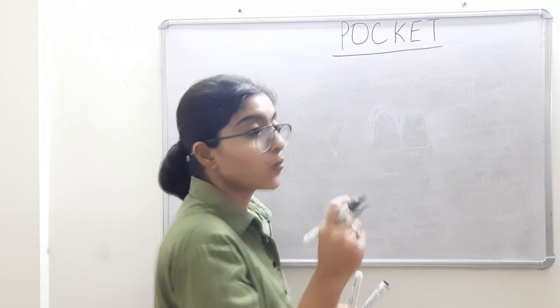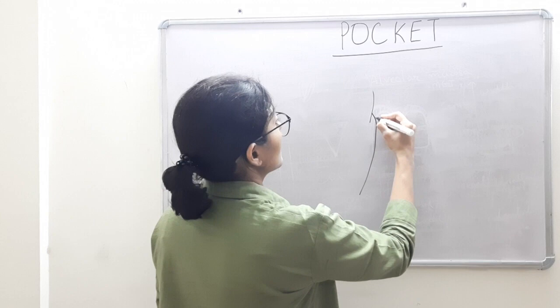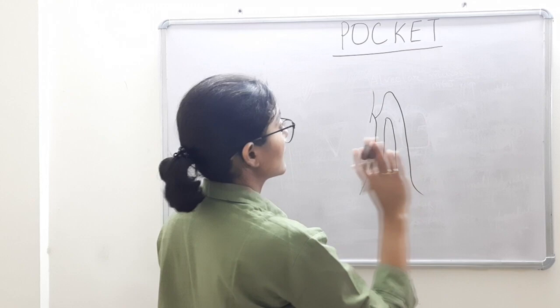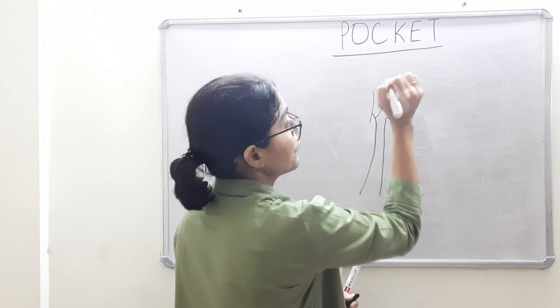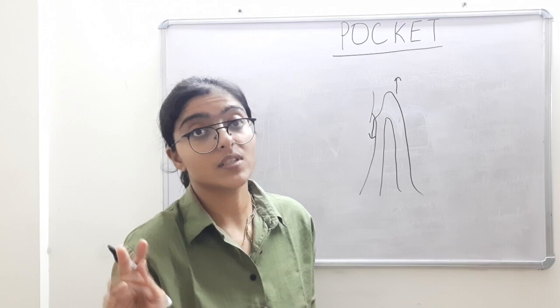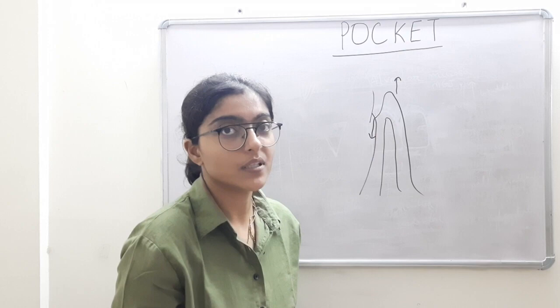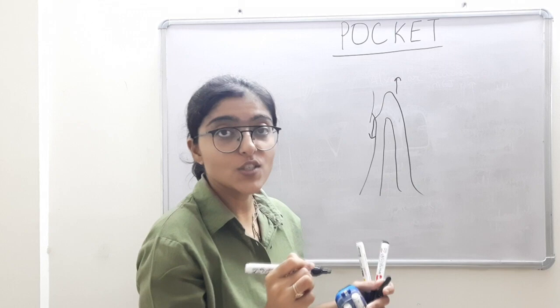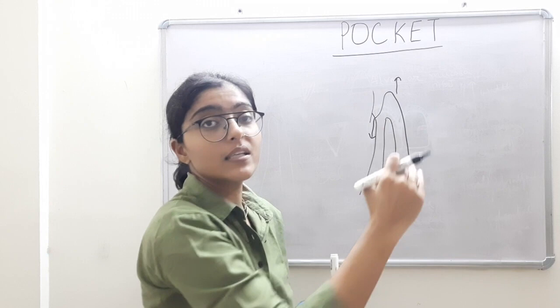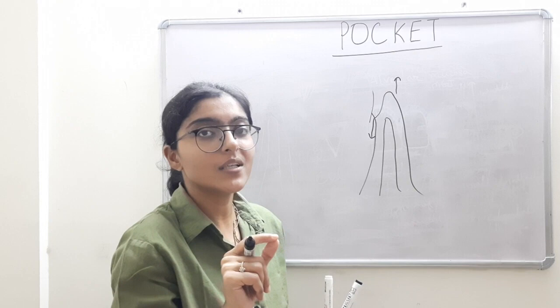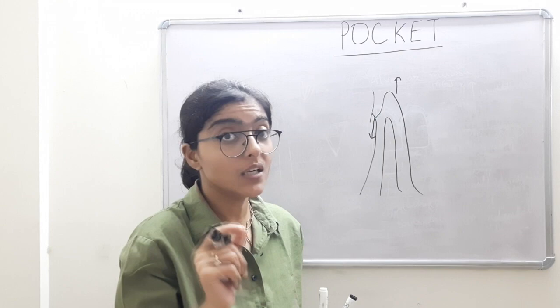This sulcus depth can deepen in two ways: either by the coronal migration of the free gingival margin or the apical migration of the base of the sulcus. The deepening by apical migration of the base of the sulcus due to the destruction of the periodontal tissues is called periodontal pocket. The deepening associated with coronal migration of the free gingival margin is also considered, but periodontal pocket is specifically the pathological deepening by apical migration of the base of the sulcus.